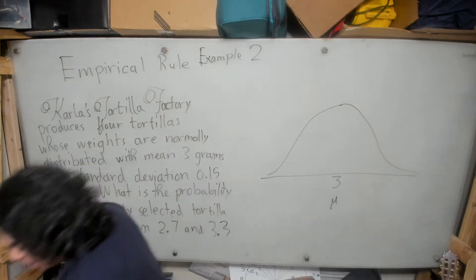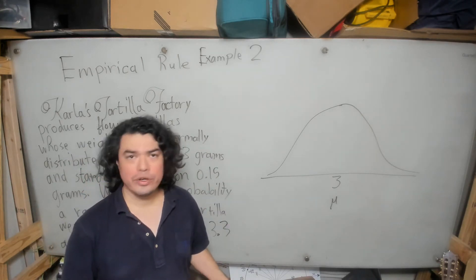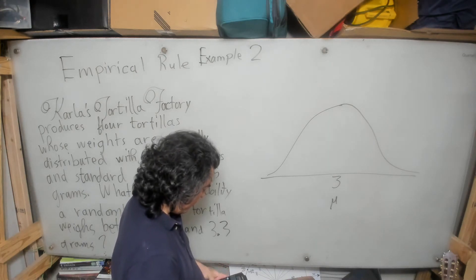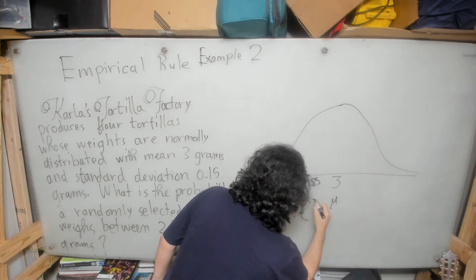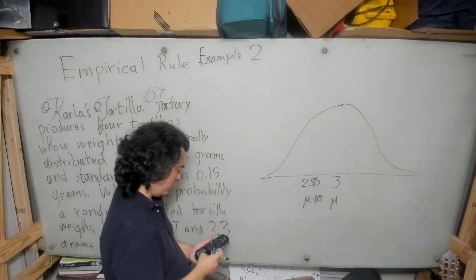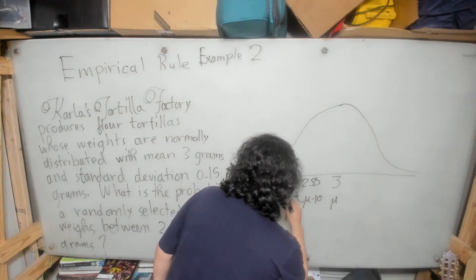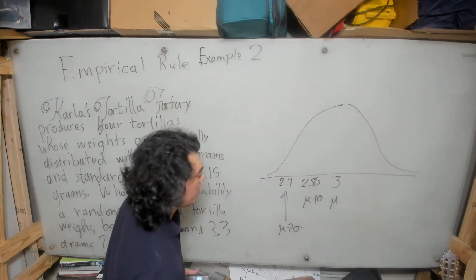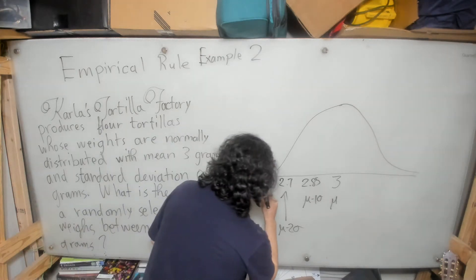Now here I could do the subtraction by hand, but just to save time, I'm going to use my calculator. You can use any calculator you want for this. So 3 minus 0.15 is 2.85. That is mu minus 1 sigma. In other words, the mean minus 1 standard deviation. I can subtract 0.15 again and I get 2.7. That is my mean minus 2 standard deviations.